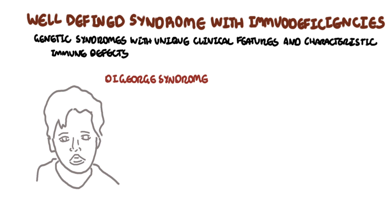These two conditions have unique characteristics and lead to increased risk of infection because they are associated with immunodeficiency. DiGeorge syndrome involves defective development of the pharyngeal pouch system, caused by a mutation in chromosome 22.